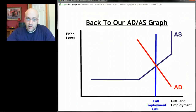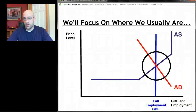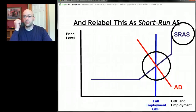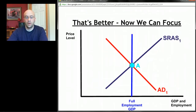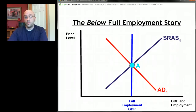Going back to our aggregate demand-aggregate supply graph: there's aggregate demand and aggregate supply, and there's a magical place we want them to cross — at full employment, represented by the blue vertical line. In this graph we have a perfect economy at full employment GDP. We're going to focus on the circled section of this graph, and we're now going to call this the short-run aggregate supply curve, or SRAS, to distinguish it from long-run aggregate supply.